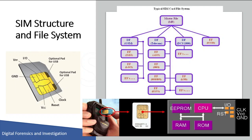The elementary file also resides under the master file and holds the integrated circuit card identity, which is the ICCID. Subordinate to each of the DF files are supporting elementary files, which contain actual data. The EF files under DF DCS1800 and DF GSM contain network-related information, while EF files under DF Telecom contain service-related information. All files have a header, but only EF files contain data. The first byte of every header identifies the file type, and the header contains information related to the structure of the file. The body of the EF file contains information related to applications.